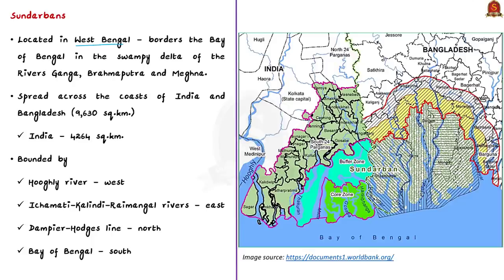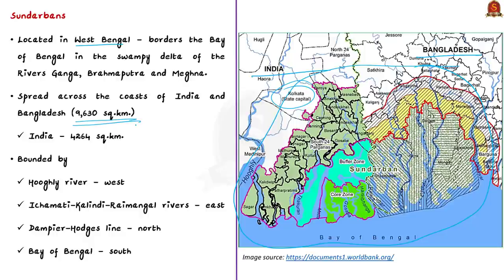Sundarbans is located in West Bengal. It lies on the southeast of Kolkata and it borders the Bay of Bengal. It is situated in the swampy delta of the rivers Ganga, Brahmaputra, and Meghna. Sundarbans is mainly located at the confluence of Ganga and Brahmaputra basin between India and Bangladesh. It extends over a vast area of about 9,630 square kilometers, and in India alone it spans about 4,200 square kilometers. So the major part of Sundarbans lies in Bangladesh.